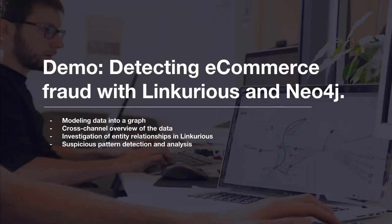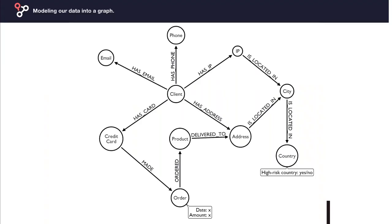We will now start a demo on detecting e-commerce fraud using Linkurious and Neo4j. To do that, we will first model our data into a Neo4j database, then investigate entity linkage inside Linkurious, and finally perform suspicious pattern detection and analysis. The first step is to model our data into a graph and load it into Neo4j.